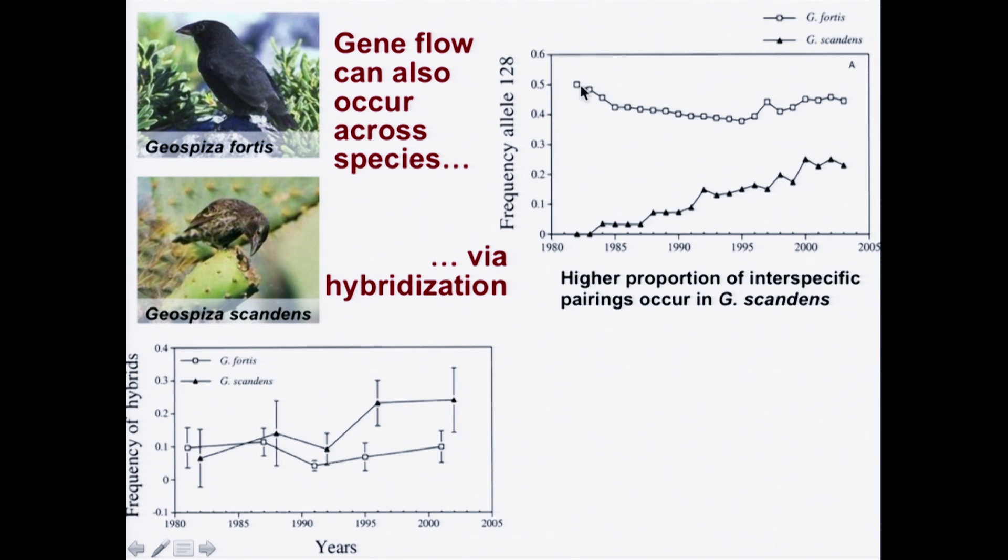Whereas in fortis, it started out at about 50, and it's declined a little bit because of hybridization with the other species. So here's gene flow, the allele 128 that has gotten into scandens from the other species, fortis.